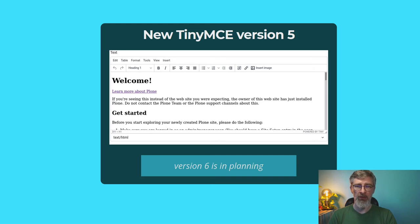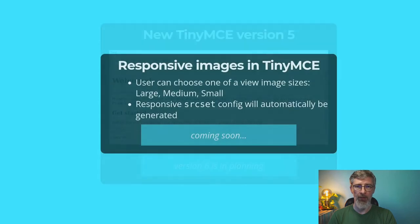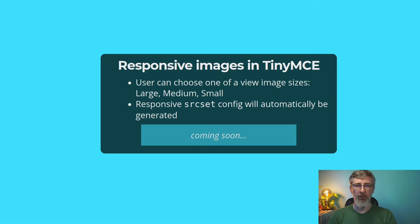We have a new TinyMCE version — currently version 5, and TinyMCE just released version 6, which will probably be coming soon. We also have responsive images in TinyMCE, still in progress. Basically, the user will have a small list of image sizes to choose from — large, medium, small — and in the background we auto-generate a responsive source set configuration, which enables the browser to choose the right image at the right time and resolution. This can provide better image quality when needed, or save a lot of download volume by not loading oversized images.